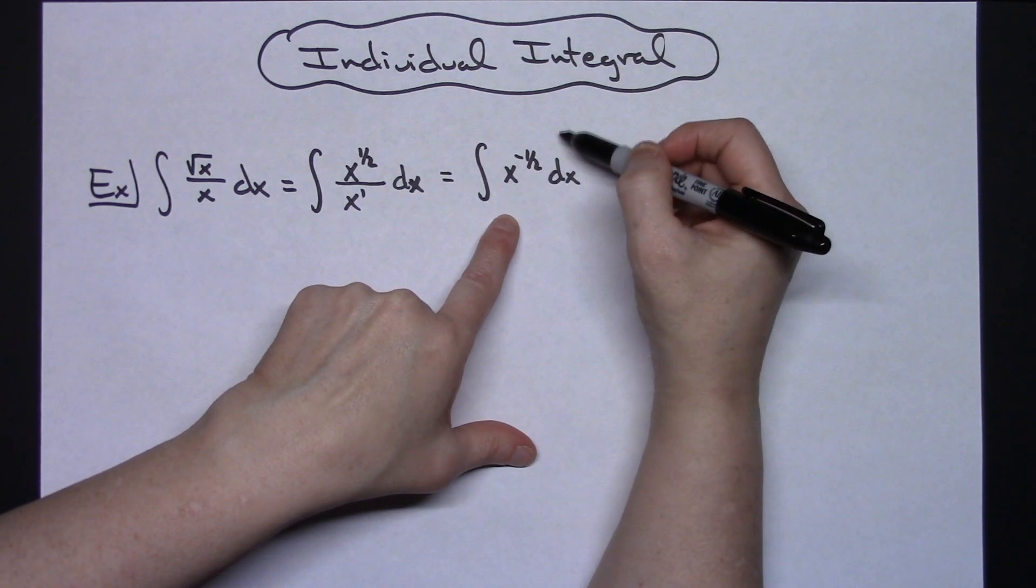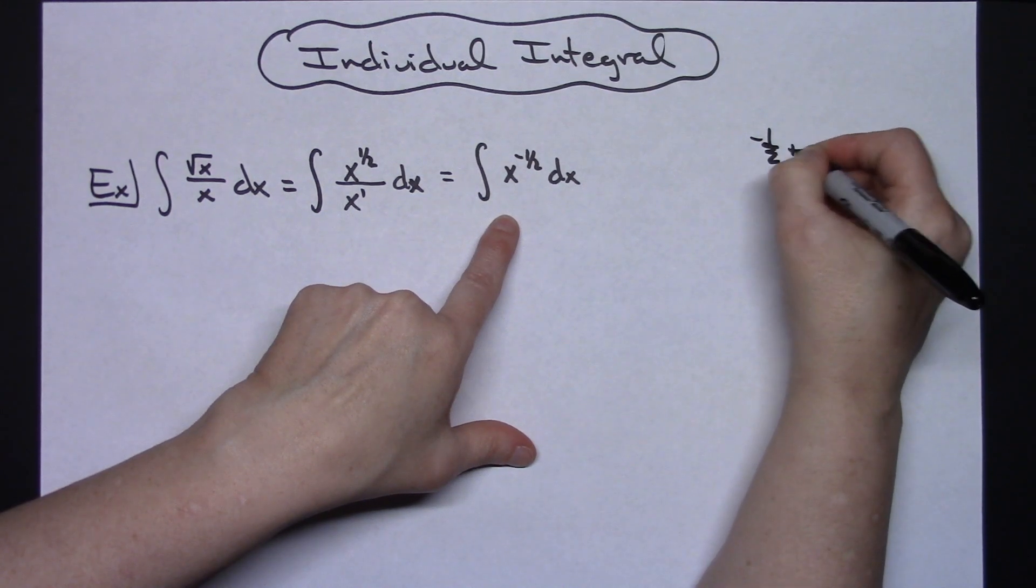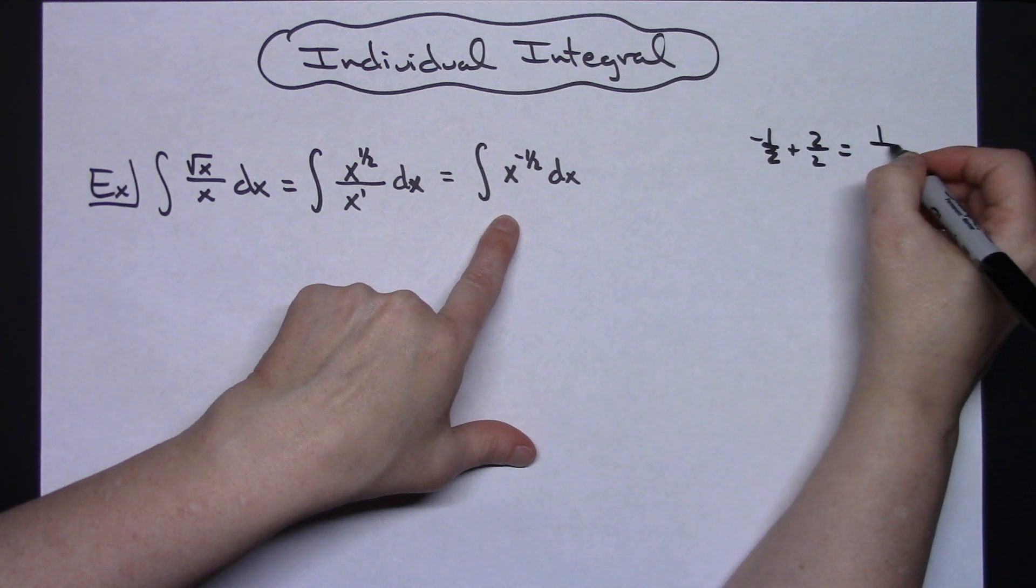Negative 1/2, I'm going to add 1 to that. Since it is fractions, negative 1/2 plus 1, so plus 2 over 2, that's going to give you a 1/2 there.